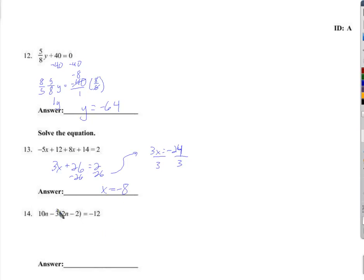Let's start by distributing the negative 3. So 10n minus 6n plus 6 because negative times negative is positive. We have 10n minus 6n is 4n. Let's subtract 6 on both sides. That's 4n equals negative 18. Divide by 4. n equals negative 18 over 4. Or if we simplify, negative 9 over 2.